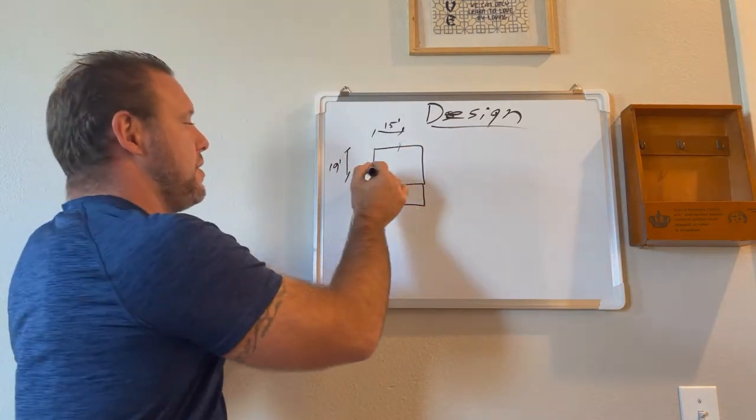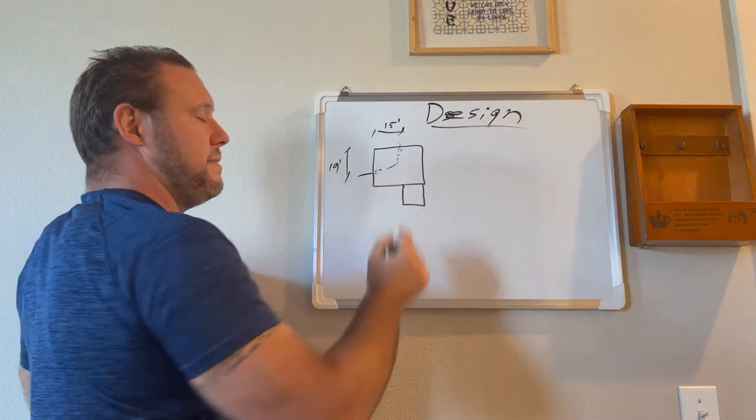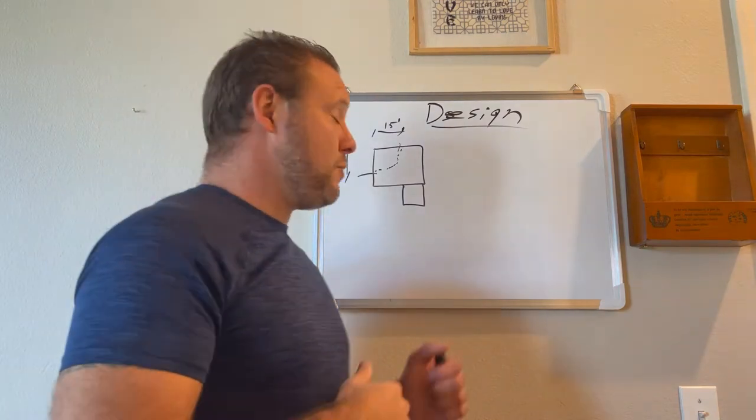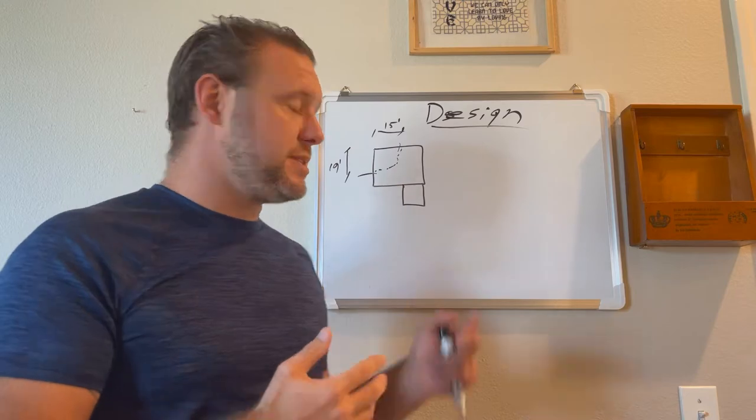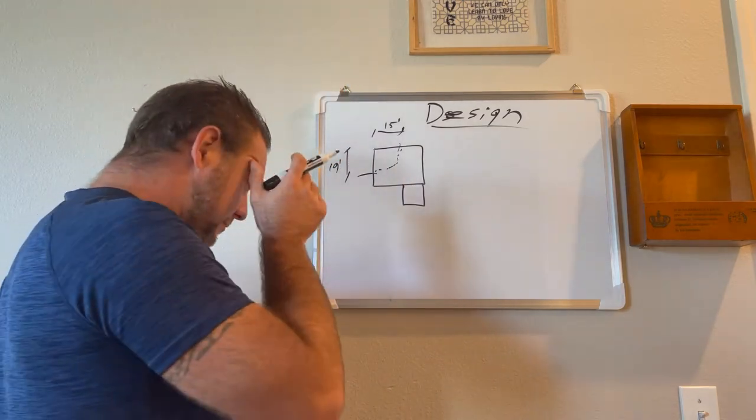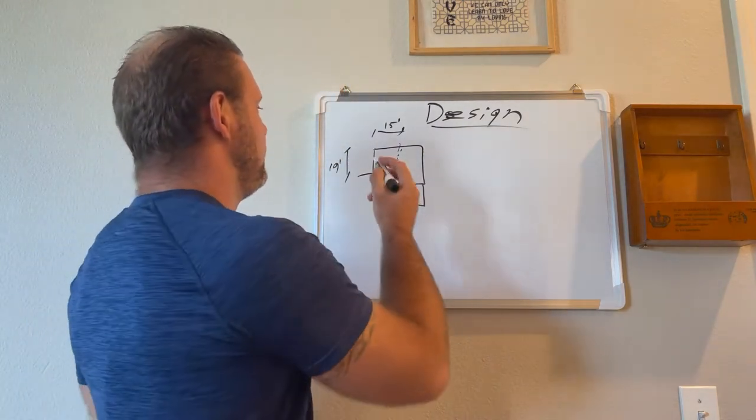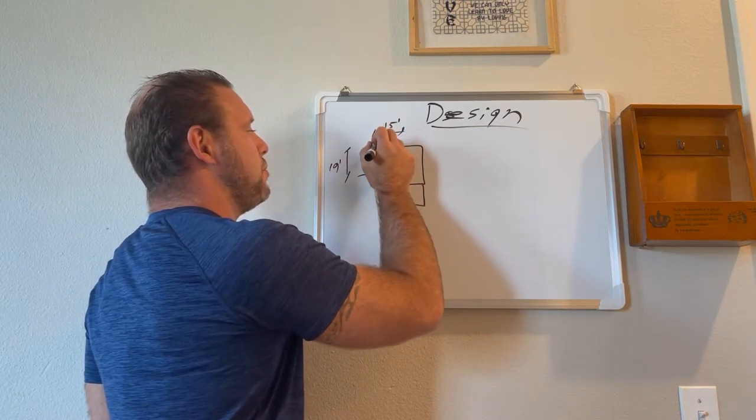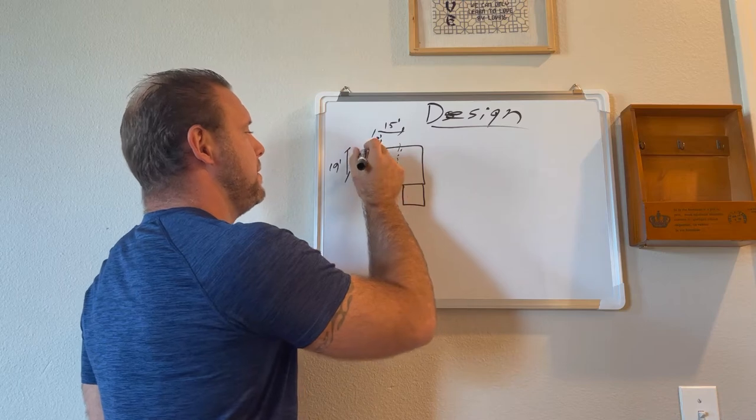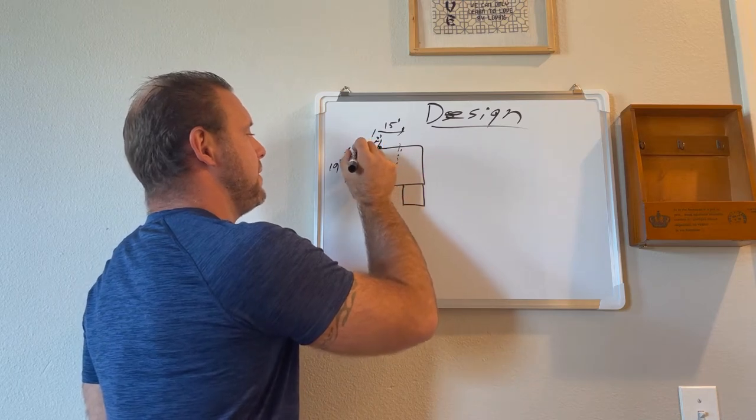We know that this section of the home has been affected by settlement and needs to be supported, and we decide to use piers or some form of steel underpinning. First things first, two feet off the corner, two feet off the corner, you'll get your first pier, two feet off the corner and you get your other pier.